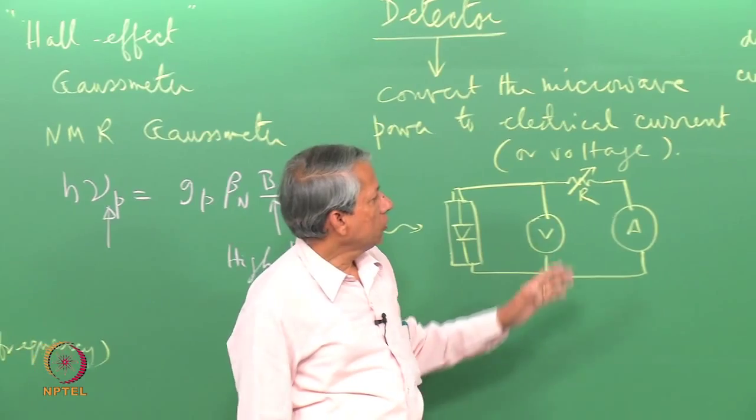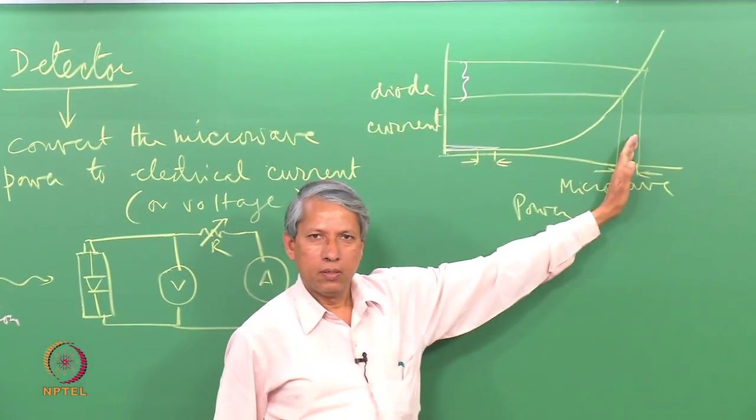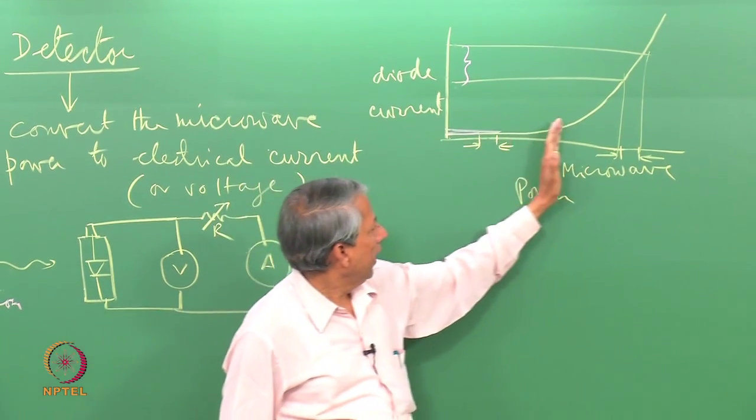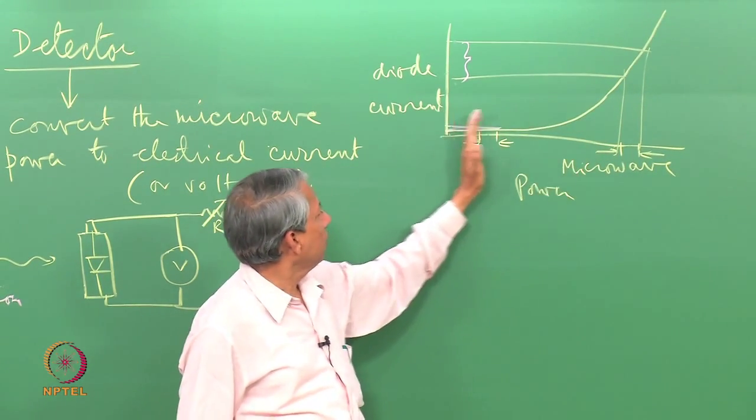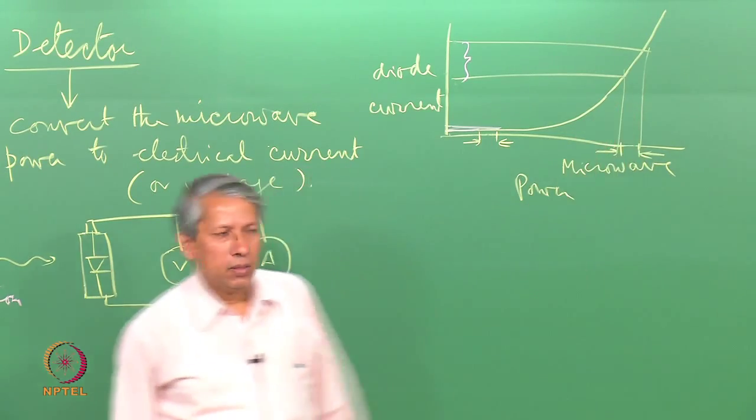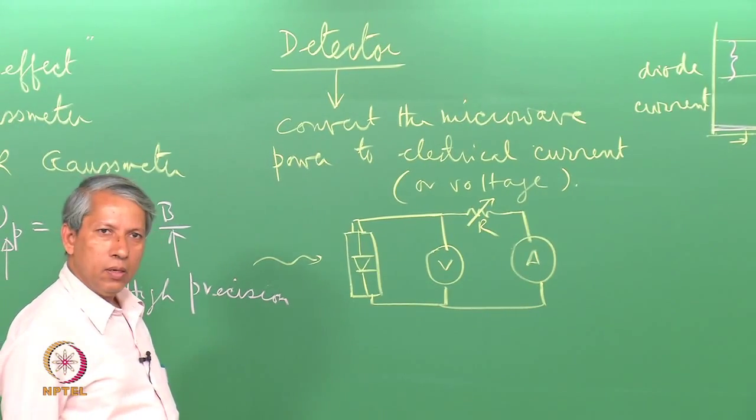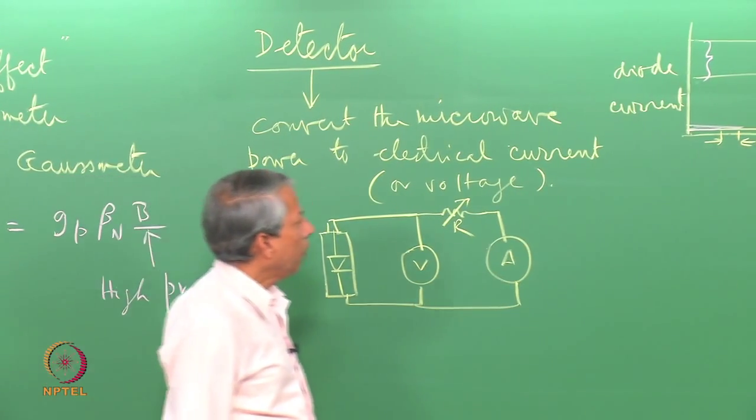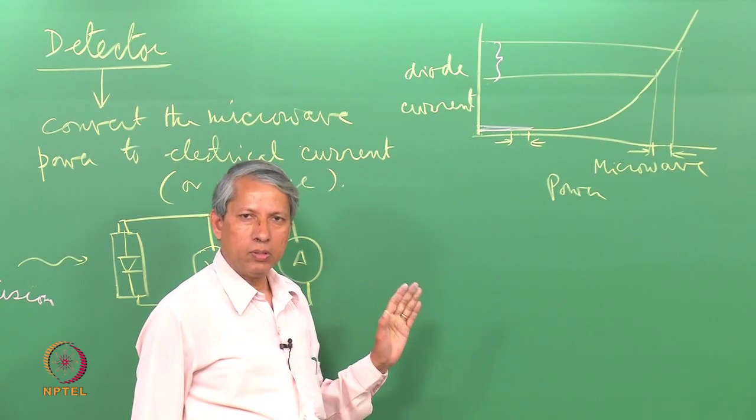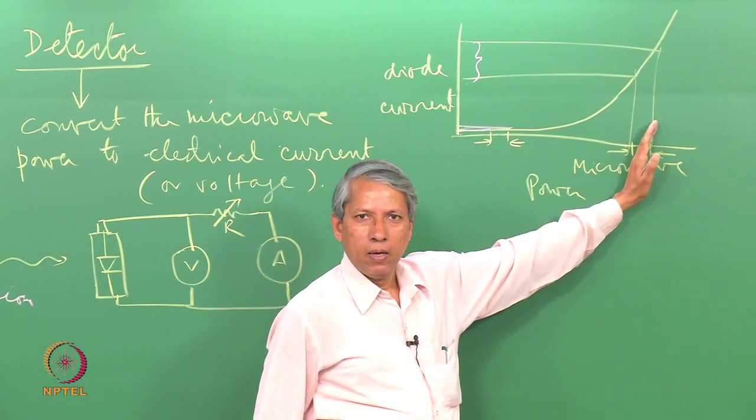So it is very important therefore to decide where we want to work. Obviously, we want to work here. To do that, I therefore have to adjust the operating position of the diode somewhere in this region. This is easily done by giving a bias power to the diode—that is, you allow a constant microwave power to fall on the diode all the time, and that way we can decide where we are.